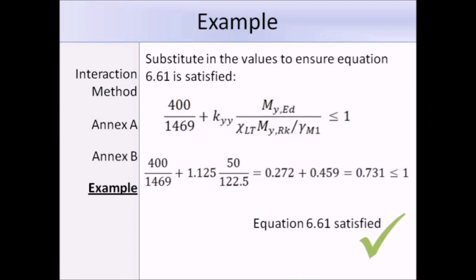Put in KYY into equation 6.61, and the final answer that we get is 0.731, which is less than 1. Therefore, equation 6.61 is satisfied, and since equation 6.62 was also satisfied, our section is suitable. This example concludes this lecture on combined axial compression and bending to Eurocode 3.